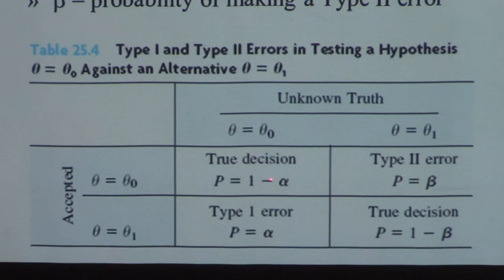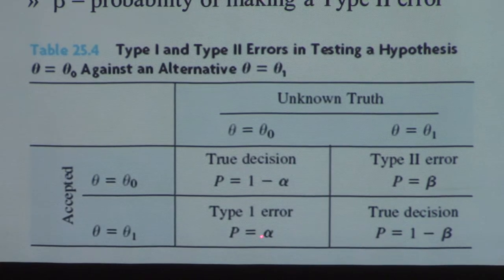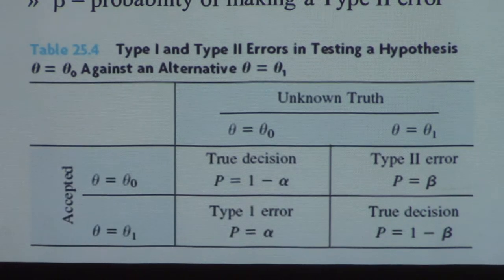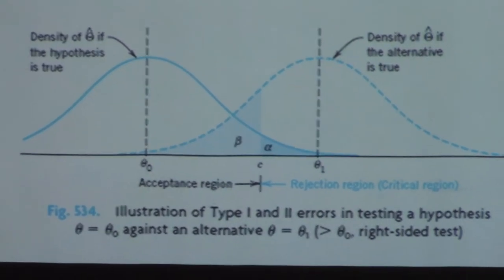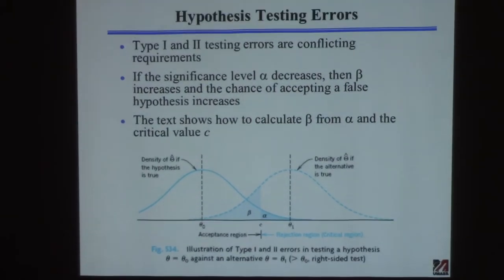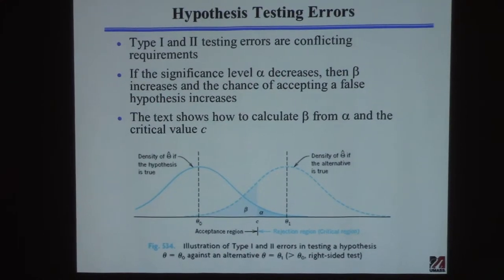If you say you want a 99.999% probability that you won't reject a true hypothesis, the problem is beta will get really big — there'll be like a 75% chance you'll accept a false hypothesis. It doesn't come for free. As the significance level alpha decreases, the probability of rejecting a true hypothesis goes down, but beta will increase and your chance of accepting a false hypothesis increases. That's why you don't choose alpha to be ridiculously small, and that's why alpha = 5% or 10% is usually a reasonable value.